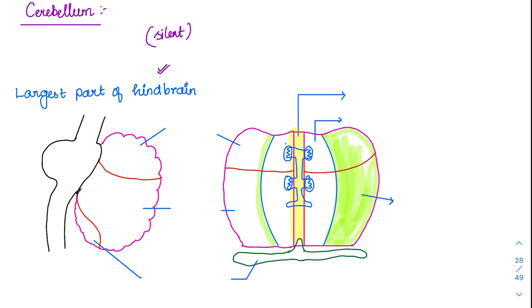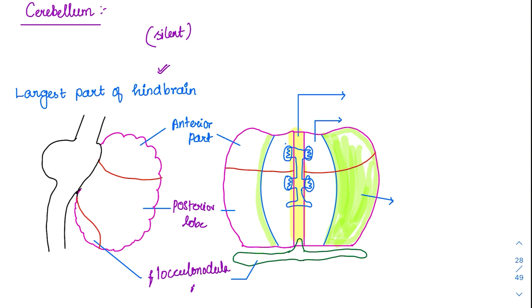Coming to the parts of the cerebellum, here we have drawn it in various sections. The first part is the anterior part. Then just behind the anterior part is the posterior part or posterior lobe. Then finally, at the bottom, there is one more lobe called the flocculonodular lobe. So these are the divisions of the cerebellum anatomically.